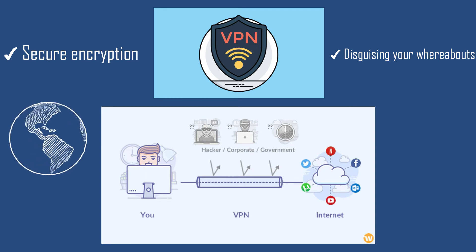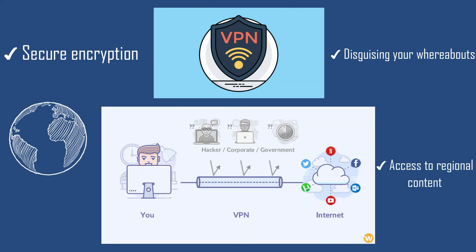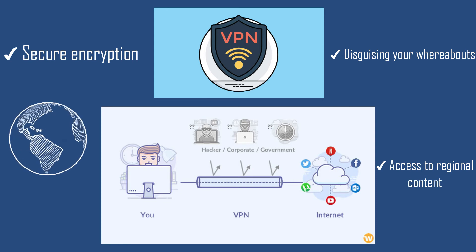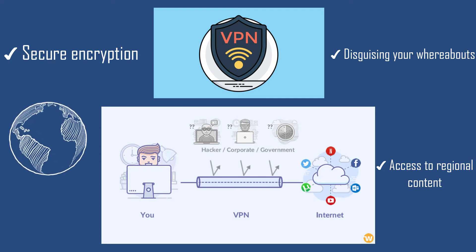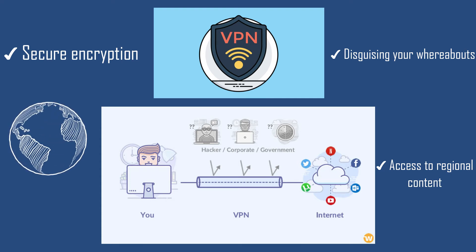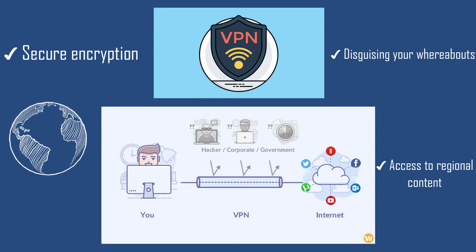The third thing is access to regional content. Some content is blocked in certain regions, like YouTube or Google in China. When you use a VPN, you are connected to another server — you are in China but connected from Germany — so you can access content that is prohibited by your ISP.